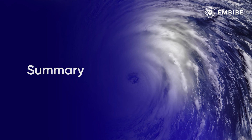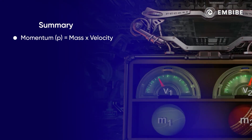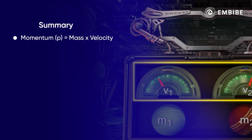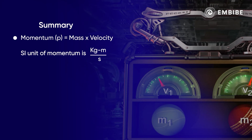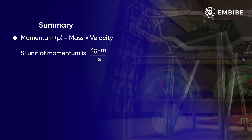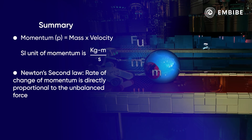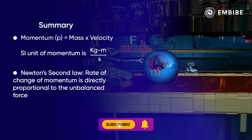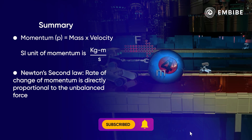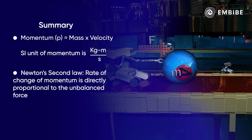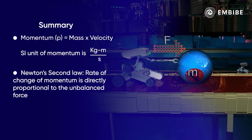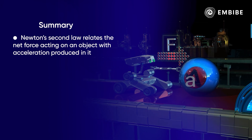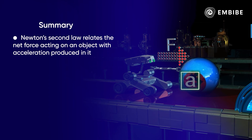Let's summarise. The momentum P of a body is defined as the product of its mass M and velocity V. The SI unit of momentum is kilogram meter per second. Newton's second law of motion states that the rate of change of momentum in a body is proportional to the unbalanced force acting on it, and it takes the direction in which the force acts. Newton's second law gives us the relation between the force acting on an object and the acceleration produced in it.